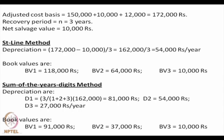The straight line method: 172,000 minus 10,000 equals 162,000, divided by 3 years, comes to 54,000 rupees per year. Book values at the end of years 1, 2 and 3 are 118,000, 64,000 and 10,000 rupees respectively. Now use sum of the years digits: 3 years remaining gives fractions 3/6, 2/6, 1/6. Depreciation amounts are 81,000, 54,000 and 27,000 rupees. Book values are 91,000, 37,000 and 10,000 rupees.